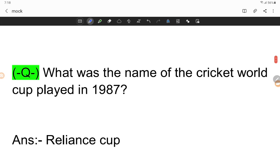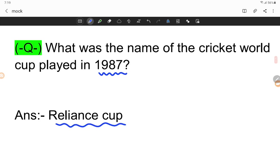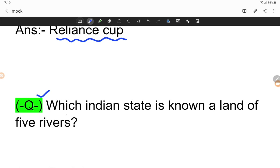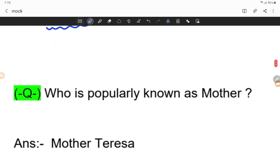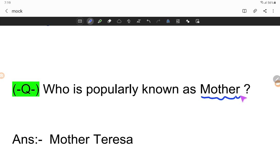What was the name of the cricket World Cup played in 1987? The answer is Reliance Cup. Which Indian state is known as the land of five rivers? Punjab. Who is popularly known as Mother? Mother Teresa.